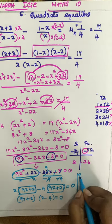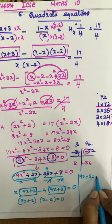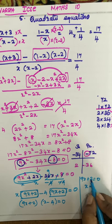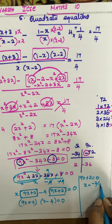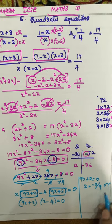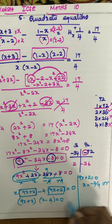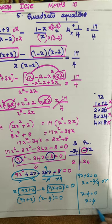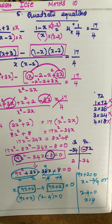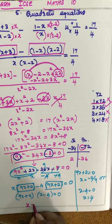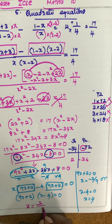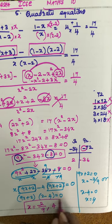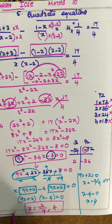So the final factors are: 9x plus 2 equal to 0, giving x is equal to minus 2 by 9, or x minus 4 equal to 0, giving x is equal to 4. So you have two solutions: x equals minus 2 by 9 and x equals 4.